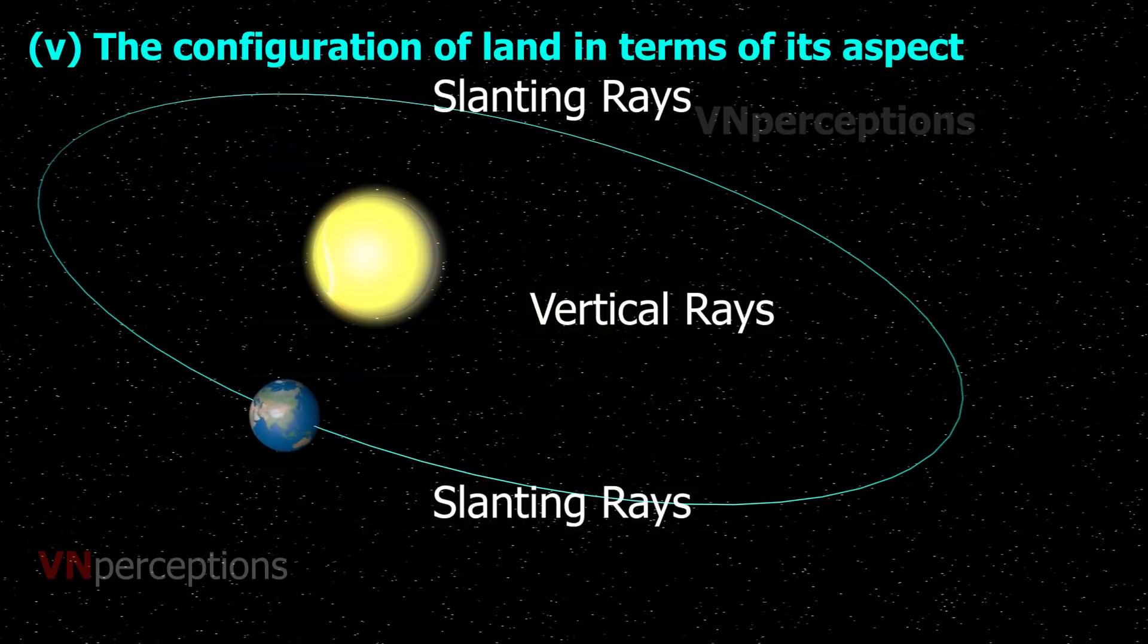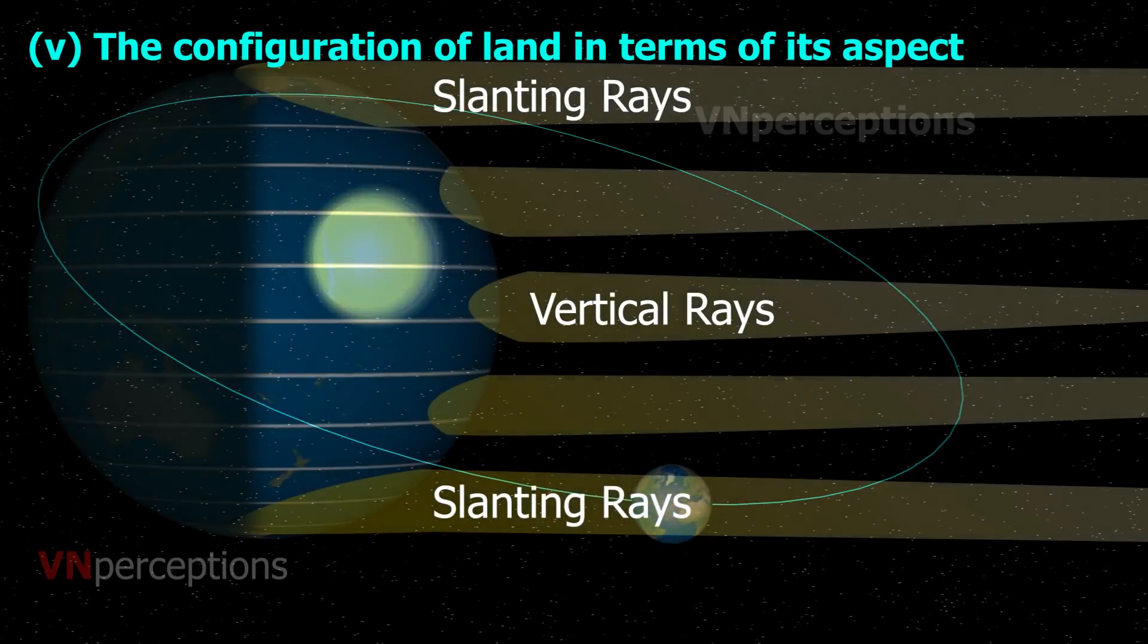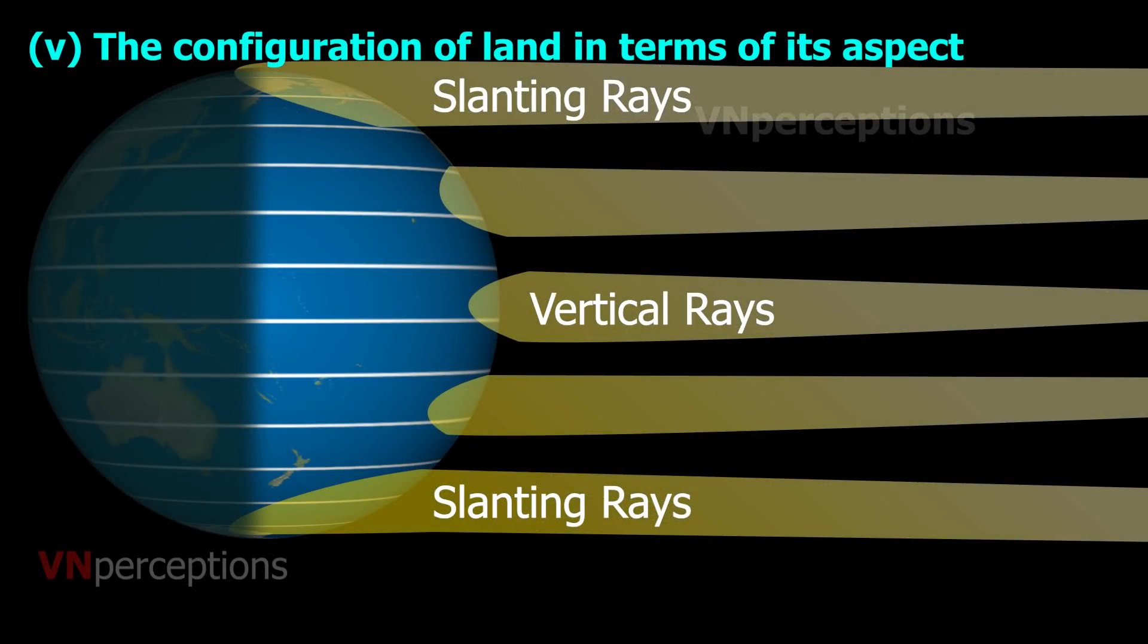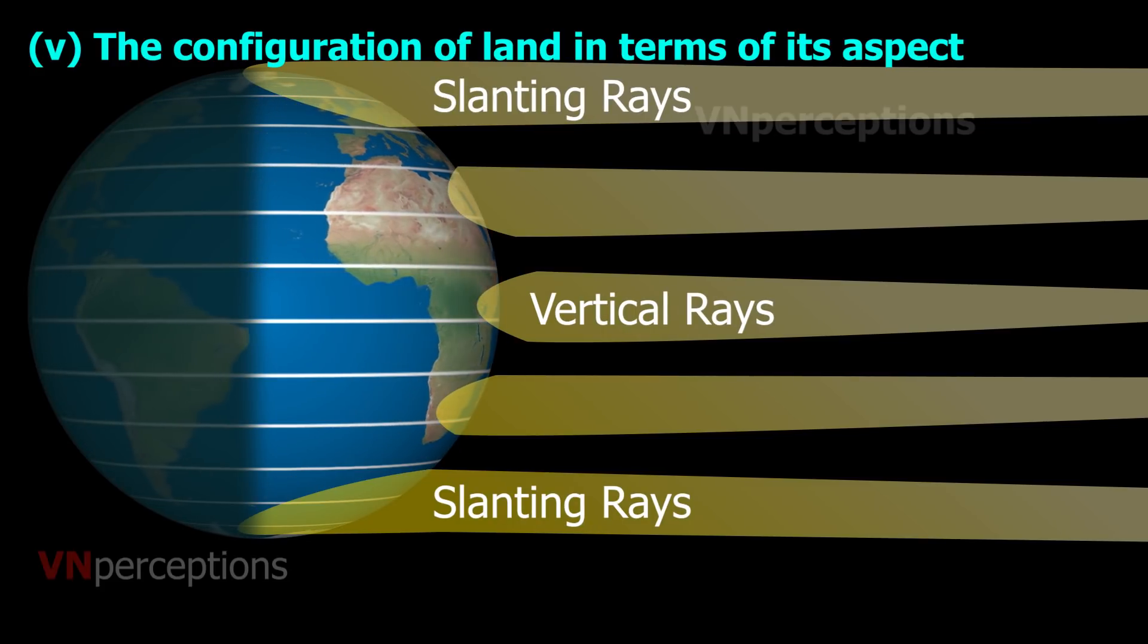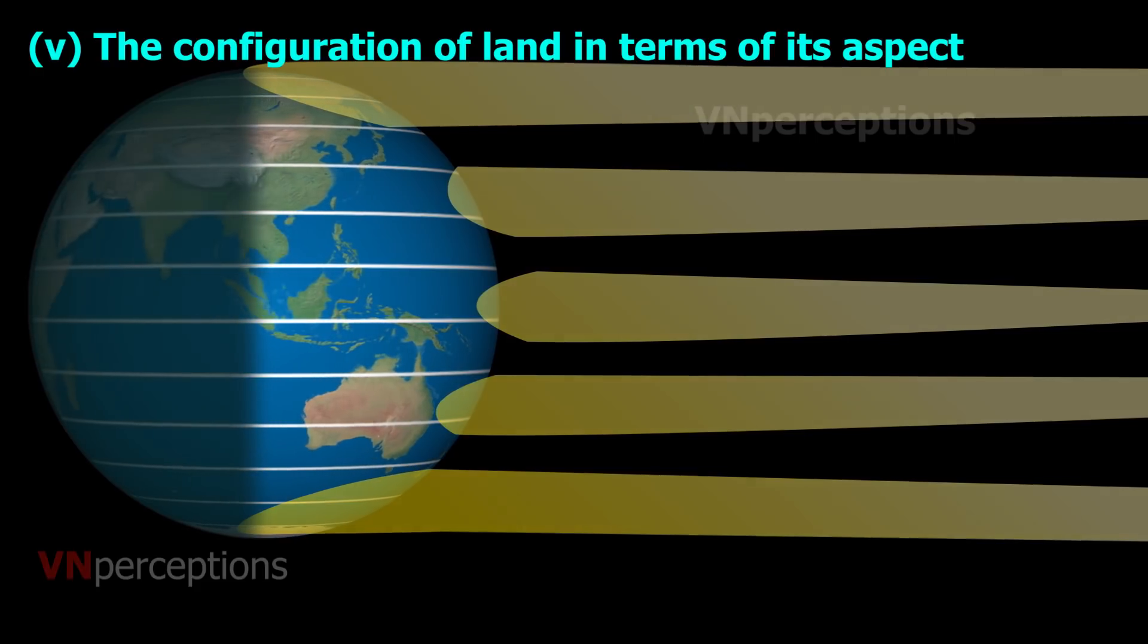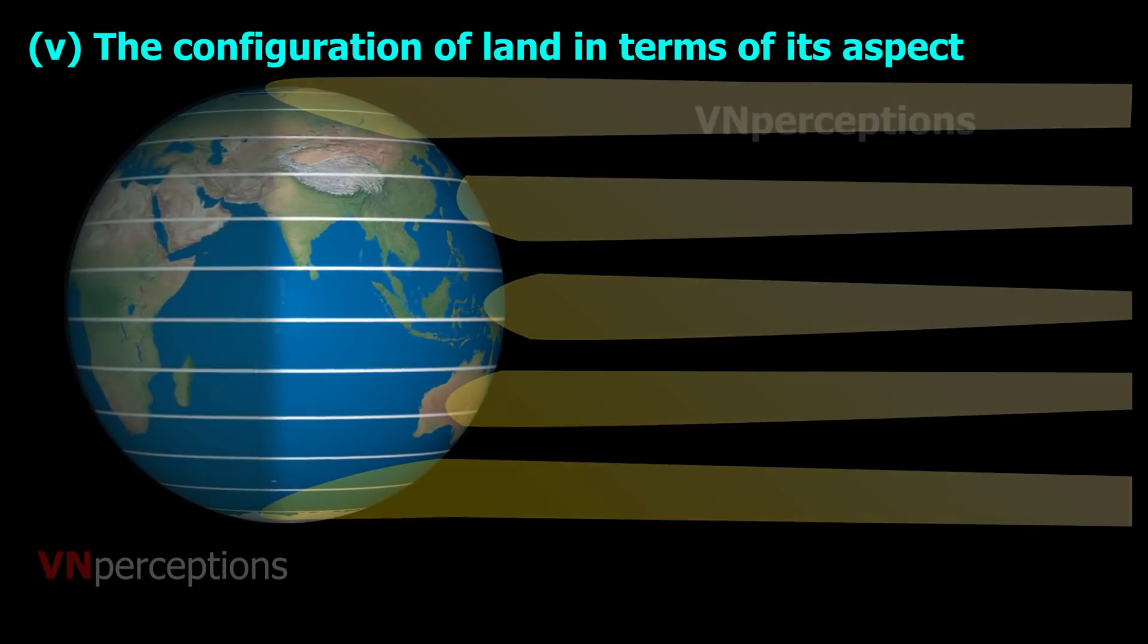The configuration of the land in terms of its aspect depends on the latitude of a place. Higher the latitude, the less is the angle they make with the surface of the earth, resulting in slant sun rays. The area covered by vertical rays is always less than the slant rays. However, these last two points have less influence.